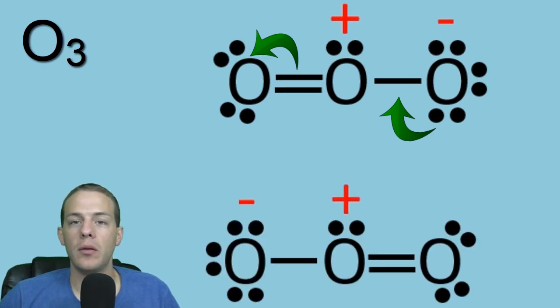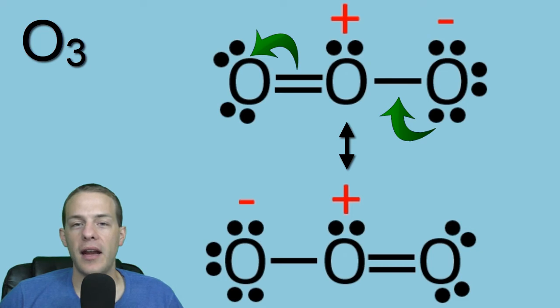So again, pause the video if you have to do whatever you have to do to confirm that the second structure that we've shown is a legitimate Lewis dot structure. So it is. The last thing to do is to place the correct symbol between these two structures and that is going to be a single double headed arrow. It's not the two half headed arrows that represents a dynamic equilibrium and that doesn't apply here. Instead, it's a single arrow with two heads on it.